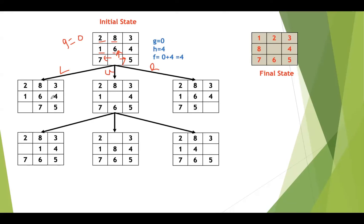After generating these states, compare the tiles with the current state against the final state — there is no match, so none is the goal state. We need to calculate g, h, and f scores. The g value will be 1 since depth of the node is now 1. For the first successor (left move): 2 is misplaced, 8 misplaced, 3 in right position, 1 misplaced, 6 misplaced, 4 in right position, 7 misplaced, 5 in right position — so h equals 5. So g=1, h=5, f=6.